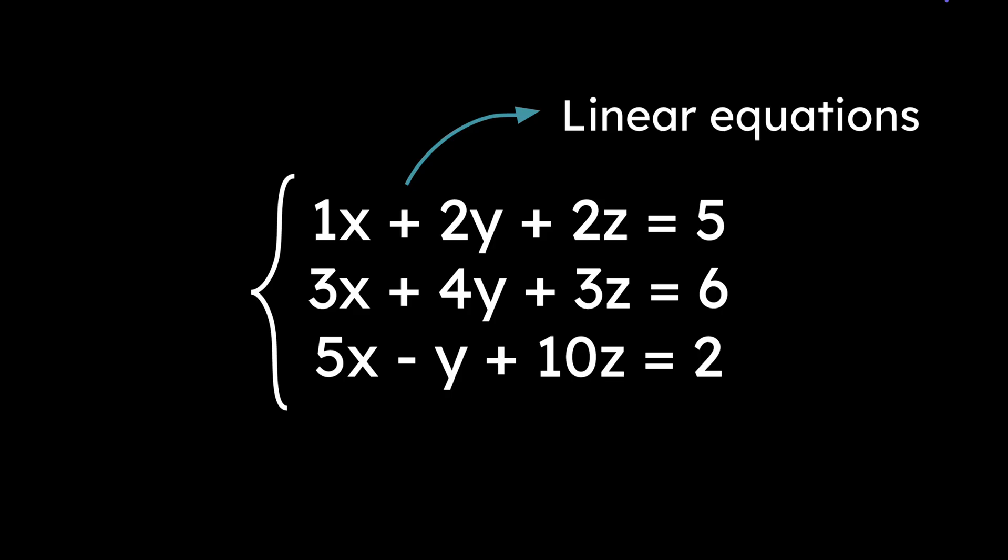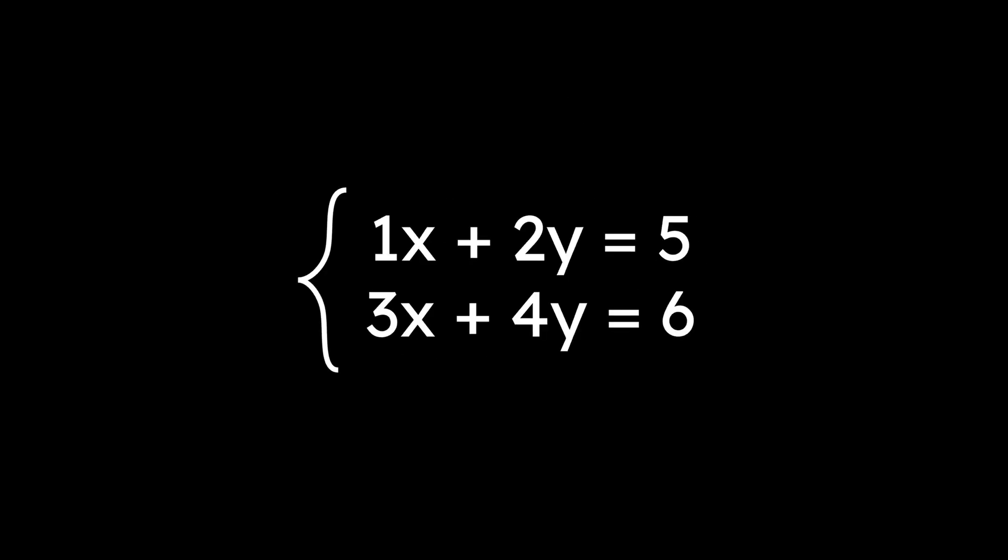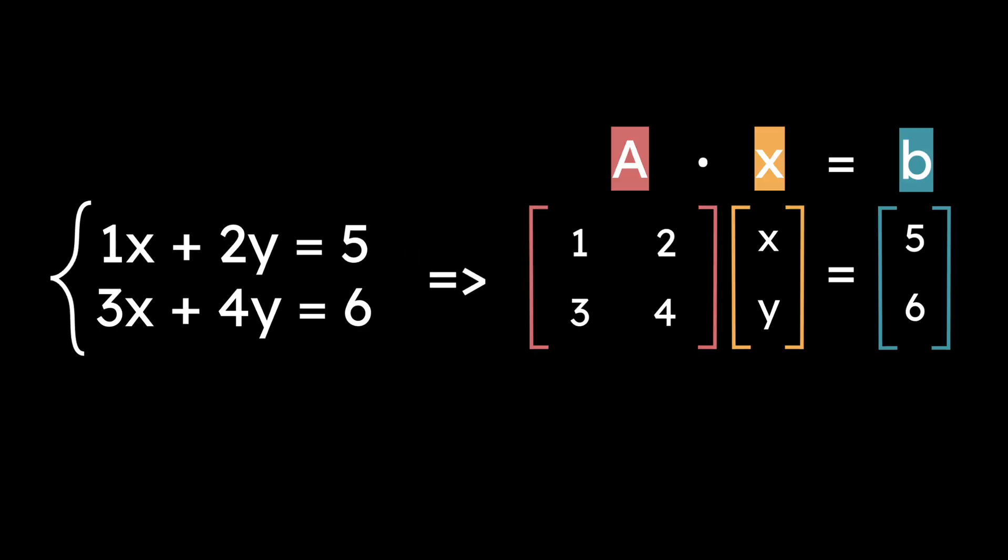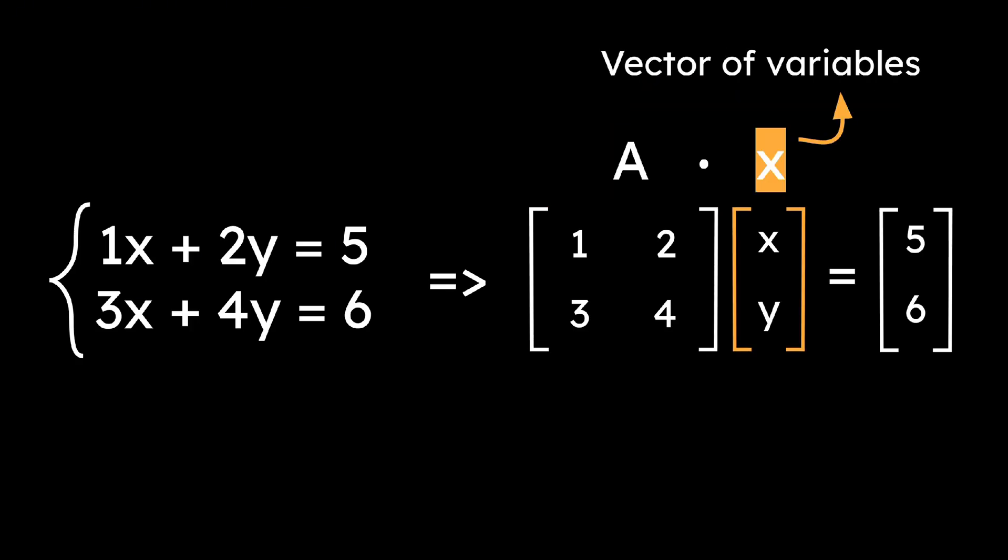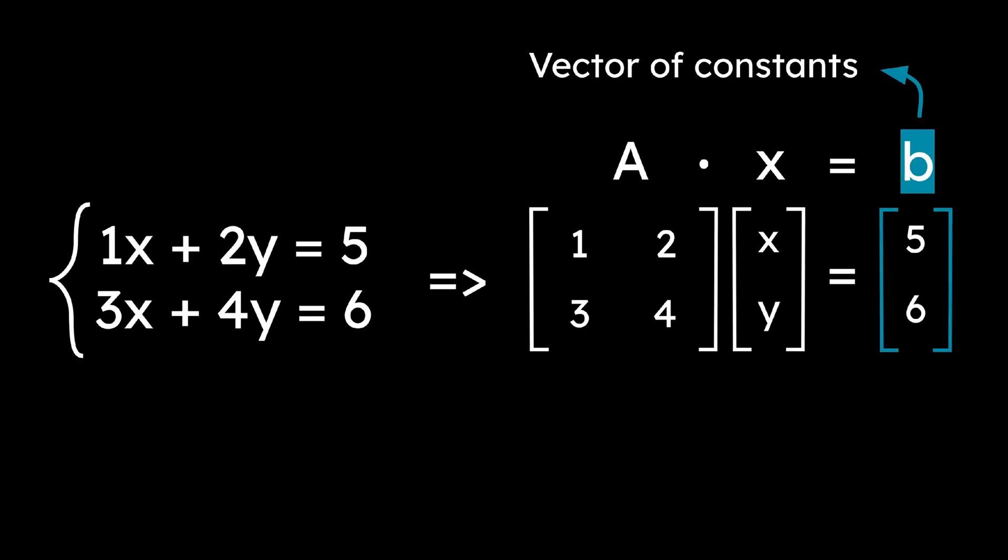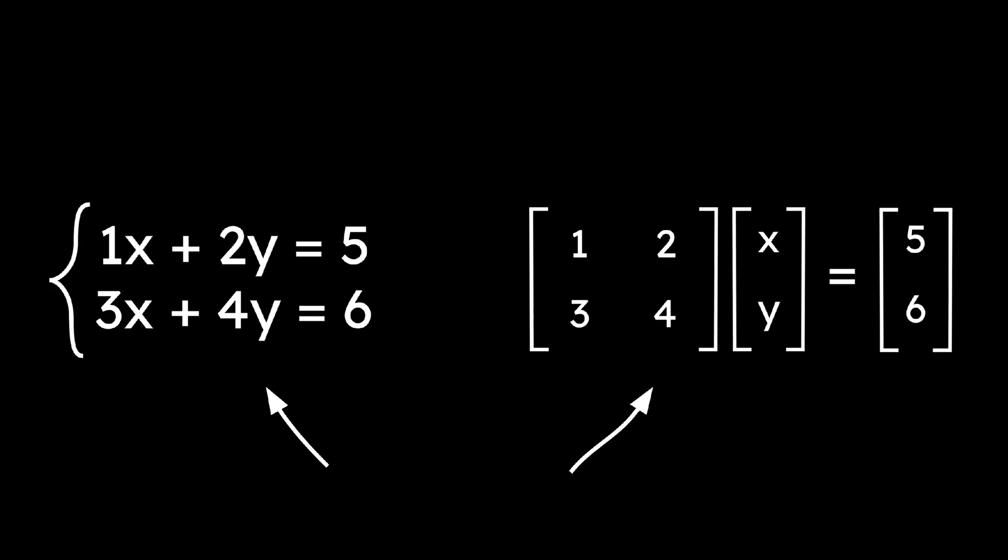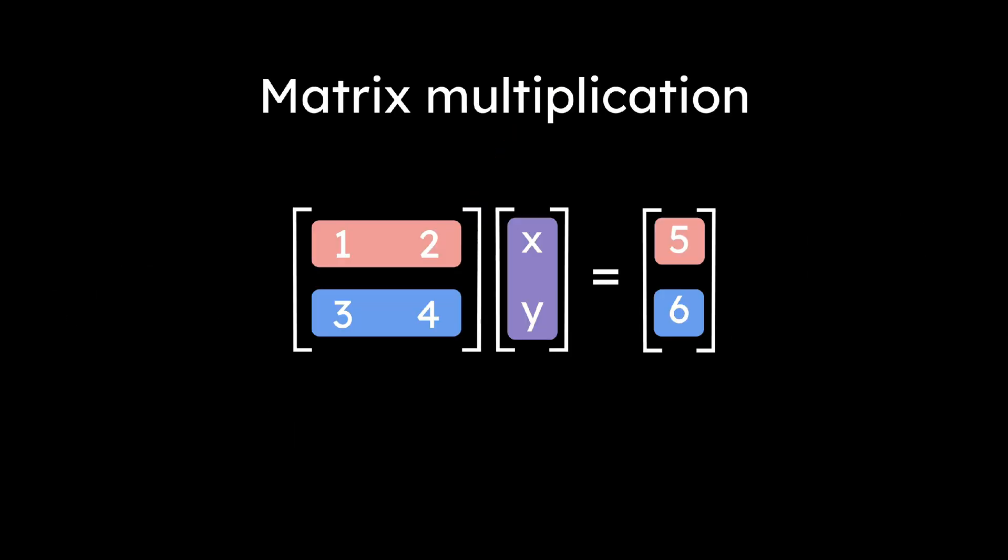Matrices are used to solve systems of linear equations. A system like 1x plus 2y equals 5 and 3x plus 4y equals 6 can be converted into a single matrix equation of the form Ax equals B, where A is the matrix of coefficients, x is the vector of variables, and B is the vector of constants. You can check that these representations describe the same system using matrix multiplication.